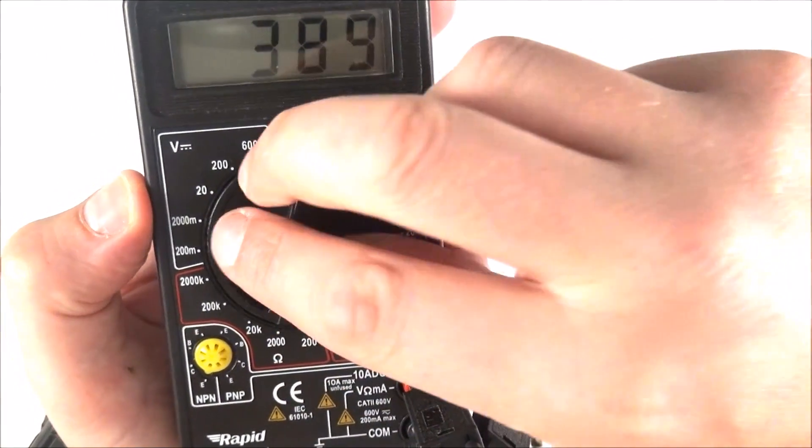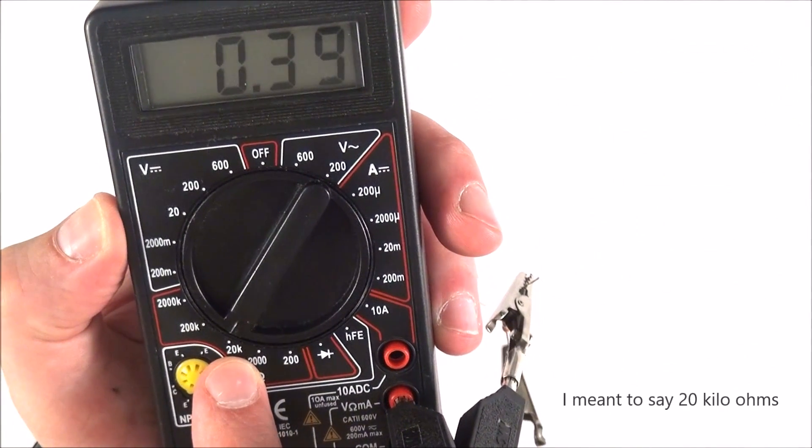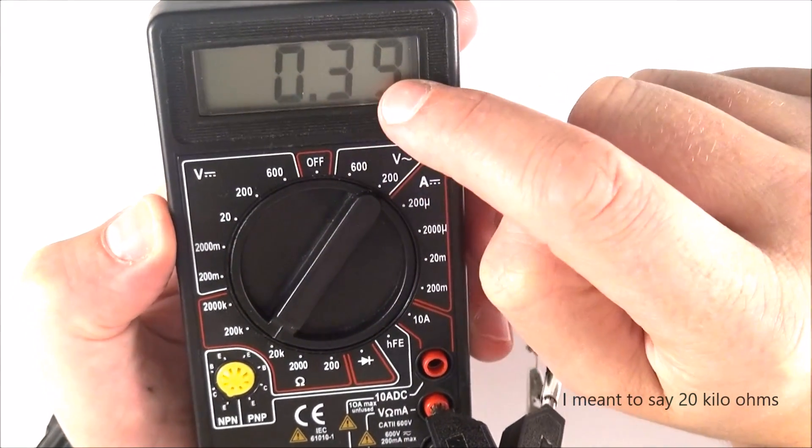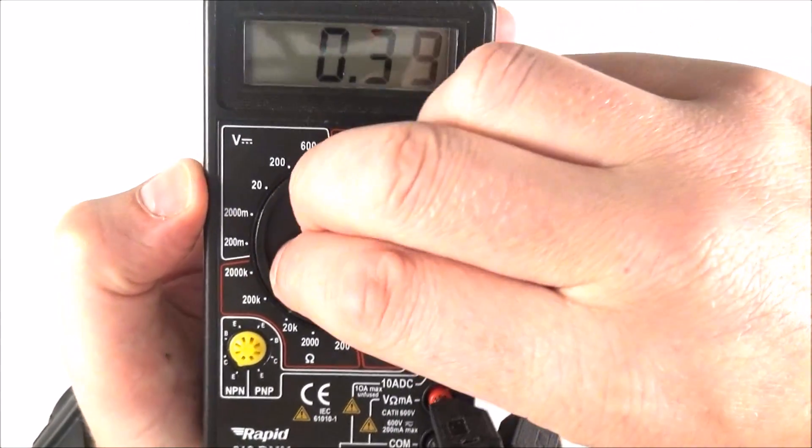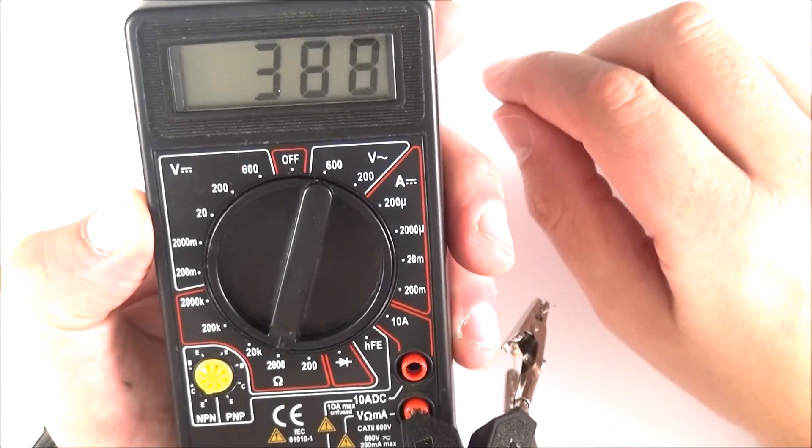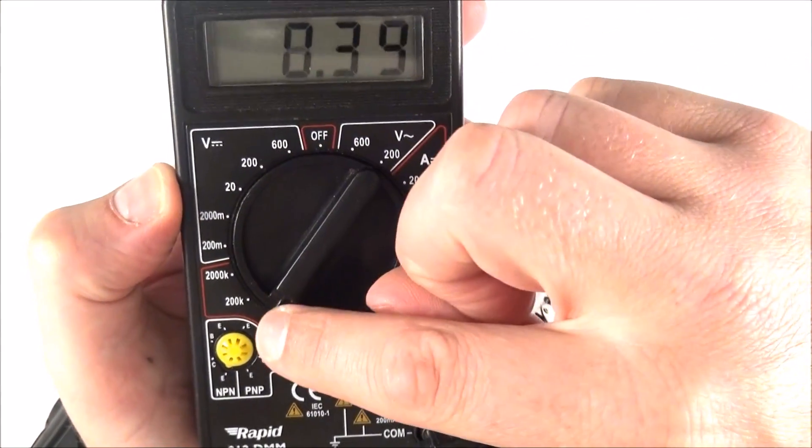Sometimes we need to go bigger, and you'll see that when we go up to 20,000 kiloohms, now this is displaying our value in kiloohms. So 0.39 kiloohms is the same as 389 ohms. But also you can see that as you go to a bigger range, you're going to get less precision with that data, and so it continues.